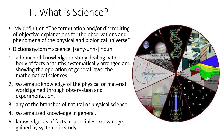Here are more dictionary definitions of science, but most of them involve looking at a process — a branch of knowledge or study dealing with a body of facts or truths systematically arranged and showing the operation of general laws. And so we are going to use a scientific process and understanding with animals as well.